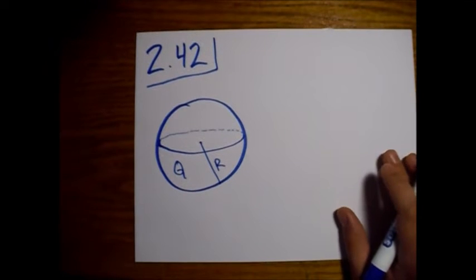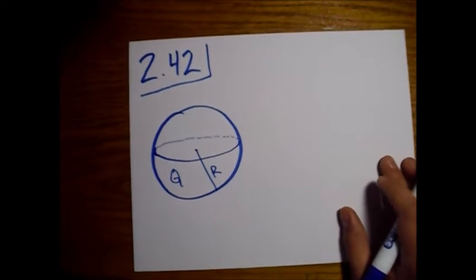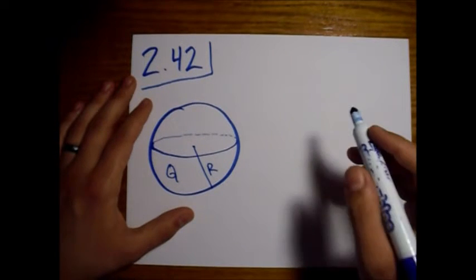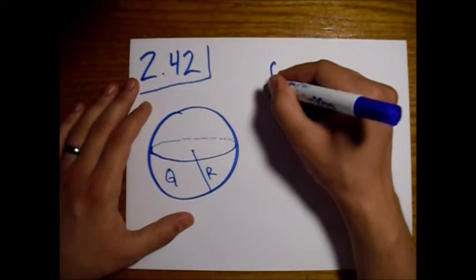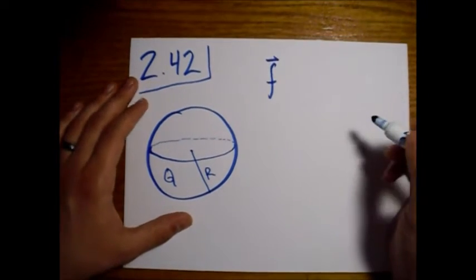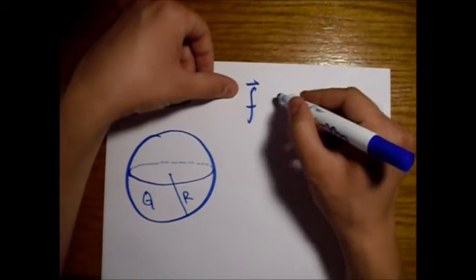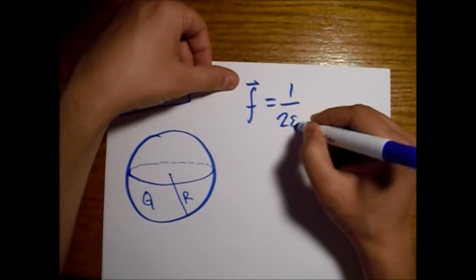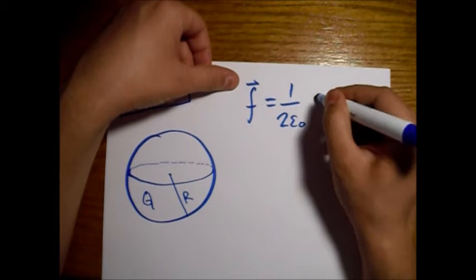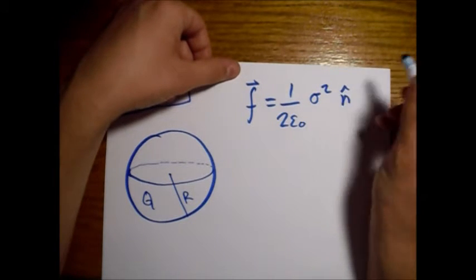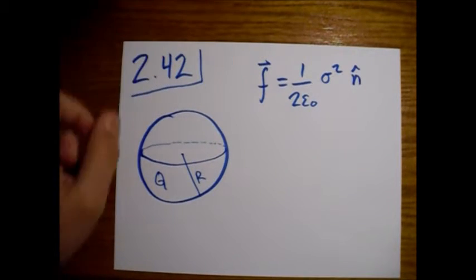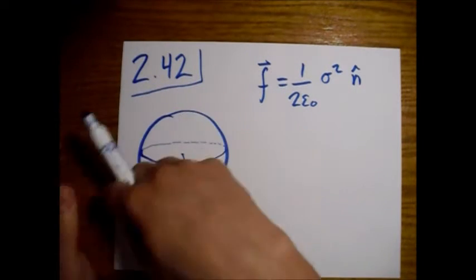So what we're going to look at is equation 2.51. This is a force per unit area, so it's a small f. So one over two epsilon naught sigma squared, and this is in the normal direction, right? So just going outwards in every direction.